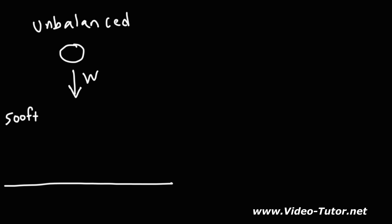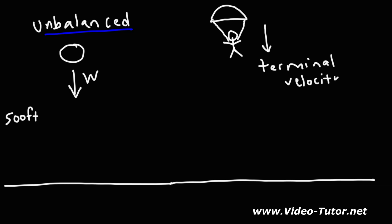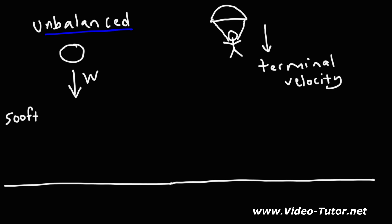Now let's consider another situation: somebody jumps off a plane and releases a parachute. As he falls, his velocity eventually stops changing — he reaches what is known as terminal velocity. When an object begins to fall its speed increases, but at some point the speed stops increasing. That's terminal speed. Would you say the forces acting on this person, once he achieves terminal velocity, are balanced or unbalanced?